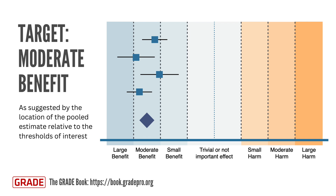As shown in the figure, four individual studies are represented by squares, and the pooled estimate from the meta-analysis is represented by a diamond. The pooled estimate falls within the range of moderate benefit, which defines the target for the certainty rating. The certainty assessment will determine how confident we can be that the true effect of the intervention is indeed a moderate benefit.